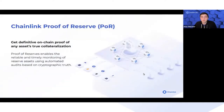So what is proof of reserve? This is a very timely topic and there are a lot of different flavors to it. The way Chainlink Proof of Reserve works is by bringing visibility onto the collateral assets that back liabilities. You can think about tokens issued on the blockchain as a liability.